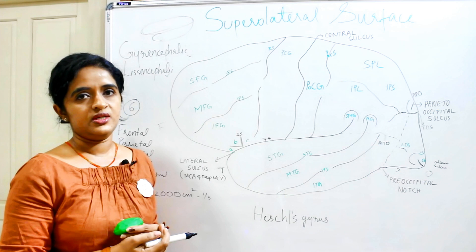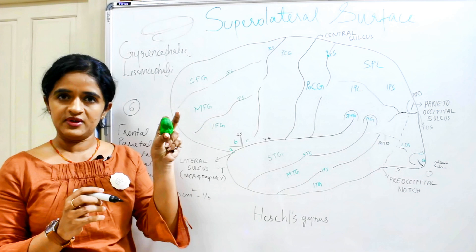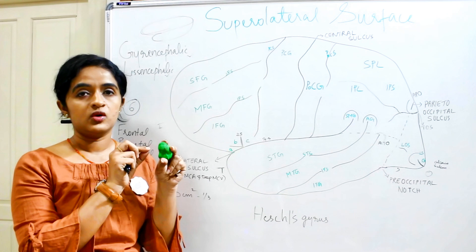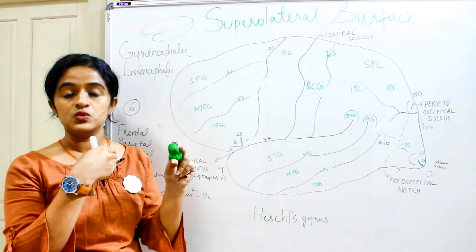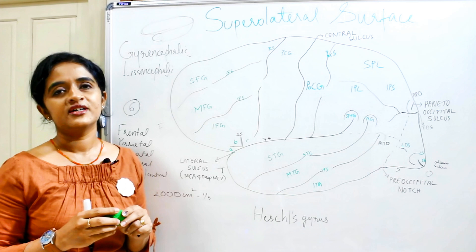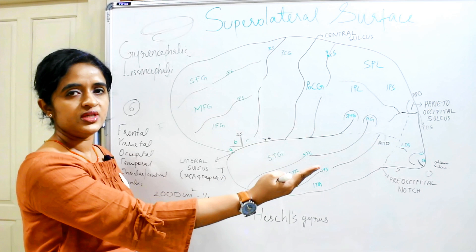There are two cerebral hemispheres. These two hemispheres are connected to each other by a bundle of white matter known as the corpus callosum. When you cut the corpus callosum, you can separate the two cerebral hemispheres. I have done a separate video on the corpus callosum — please go and see it.